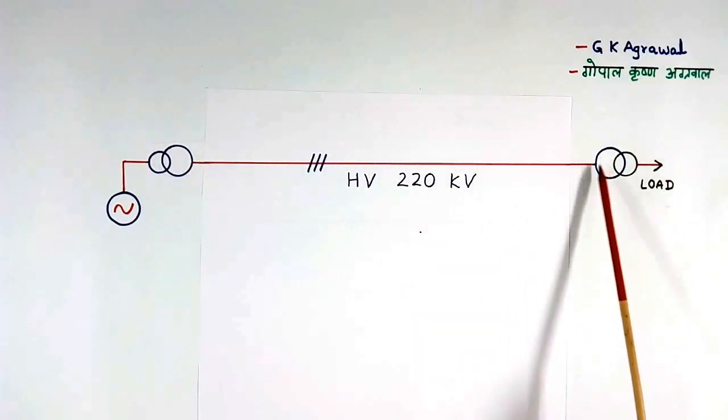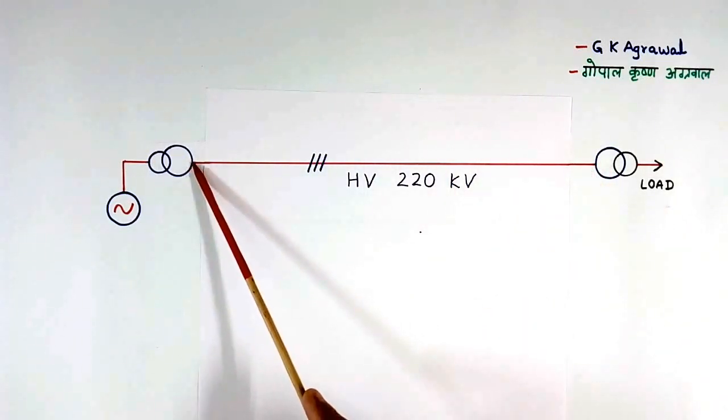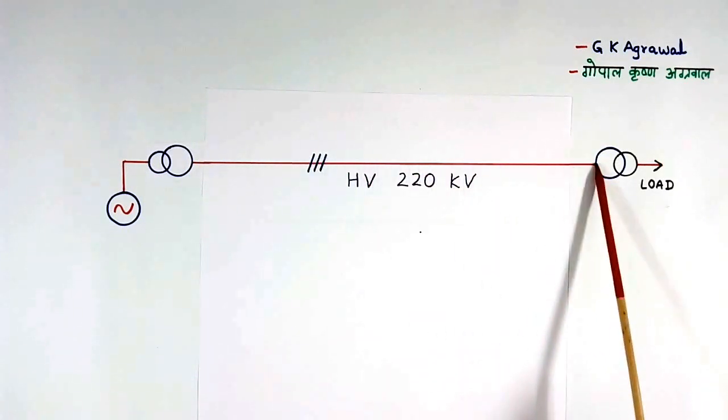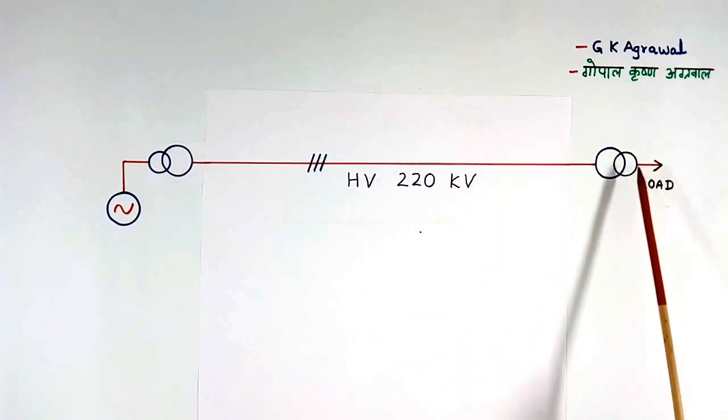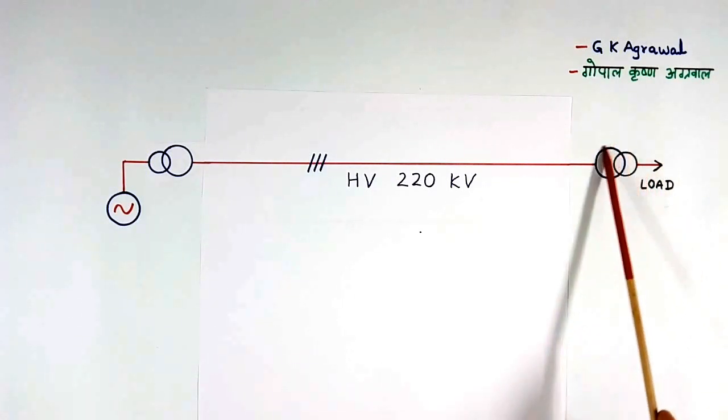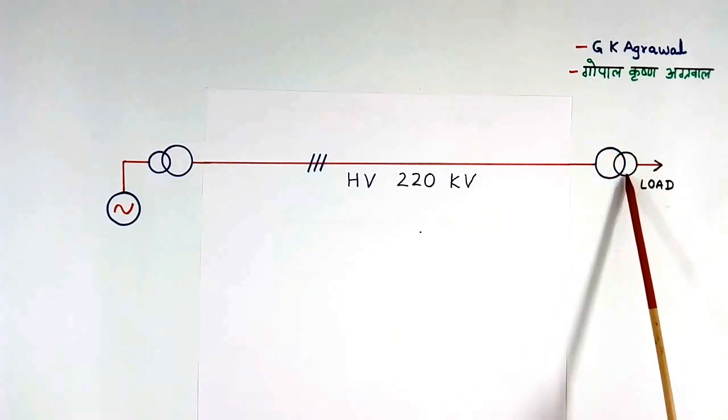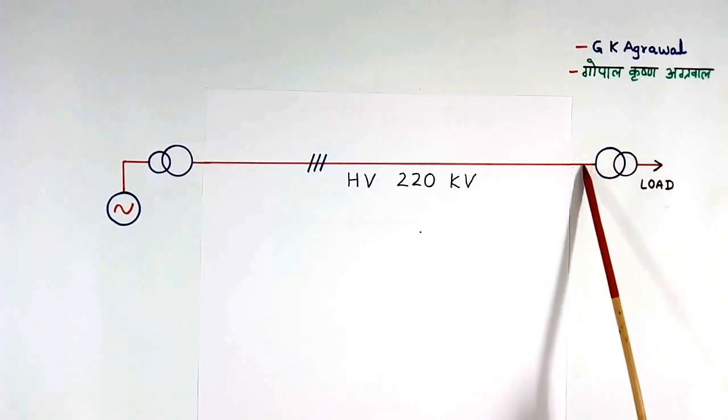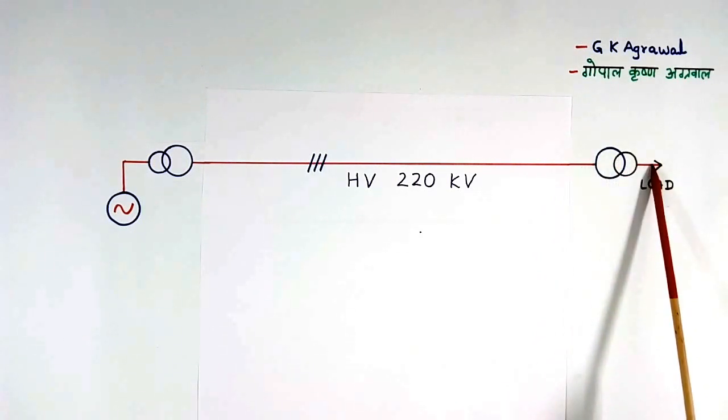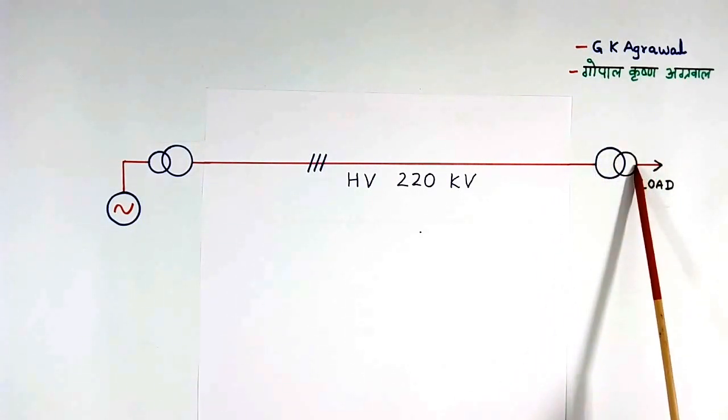Then this is transmission line. Power is transmitted at high voltage. And this is load. Here again we have transformer. This is step-down transformer. We convert high voltage into low voltage using step-down transformer.